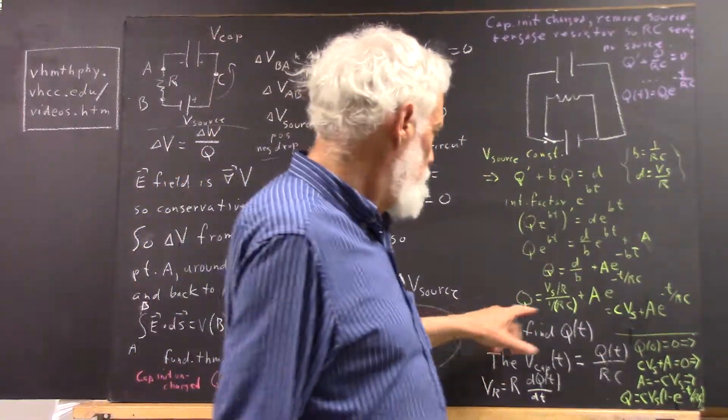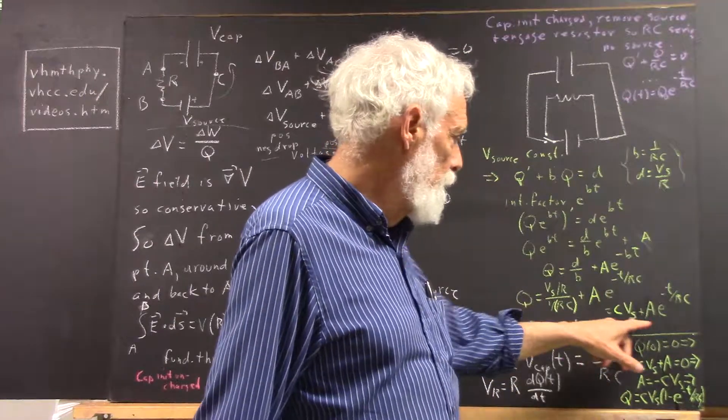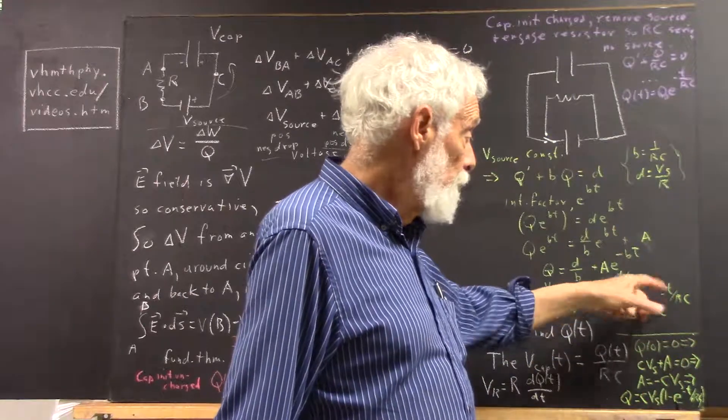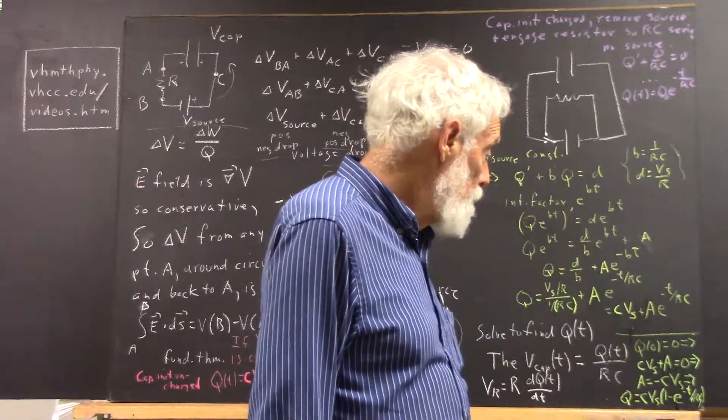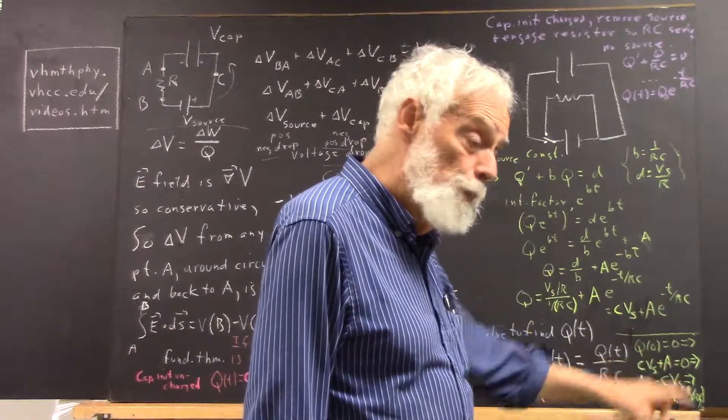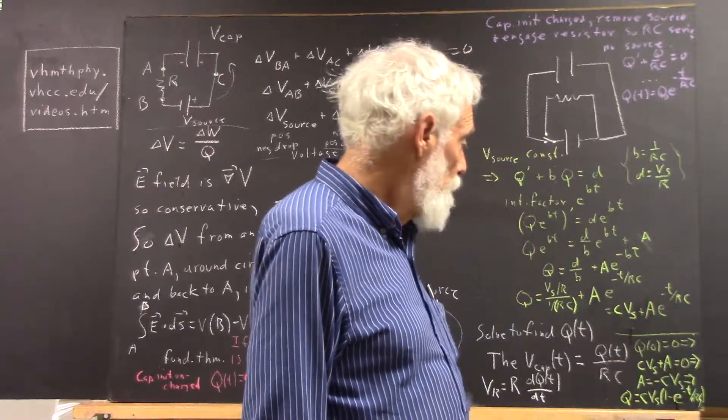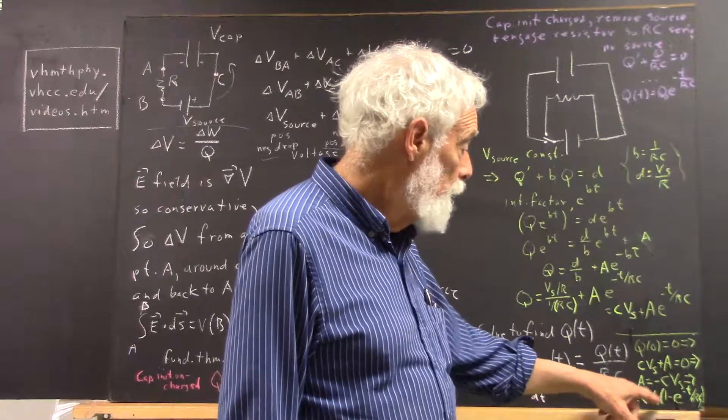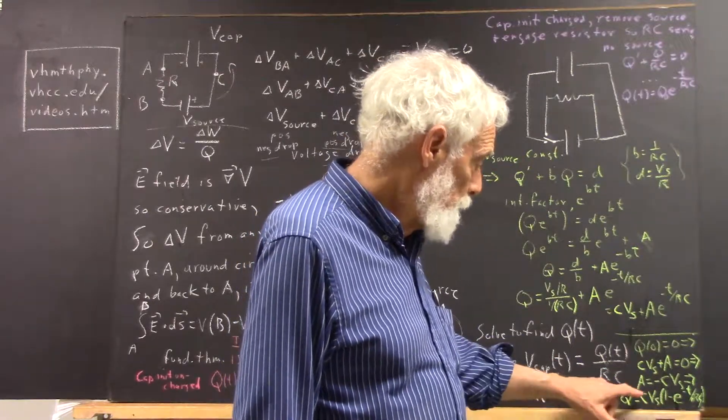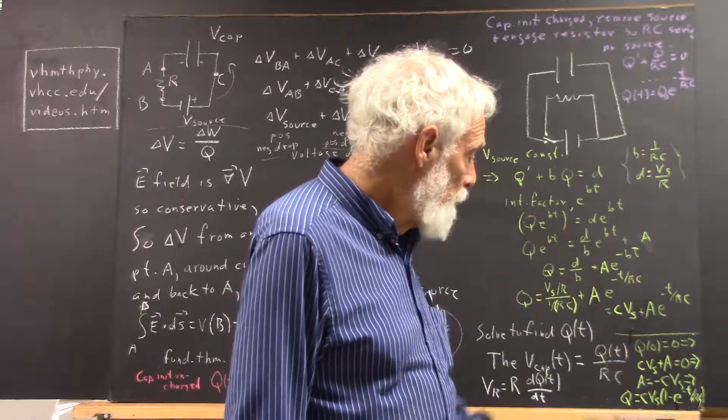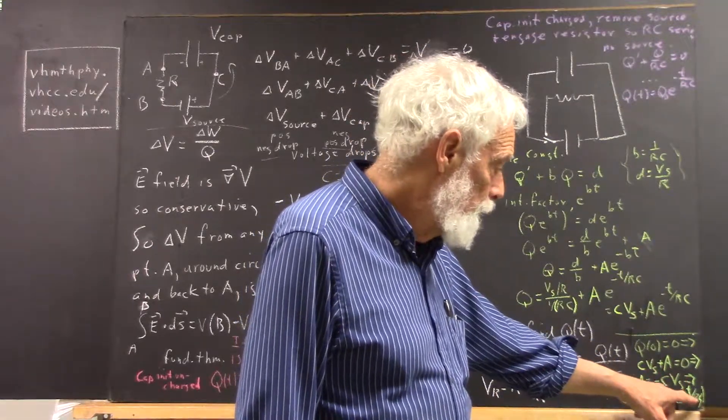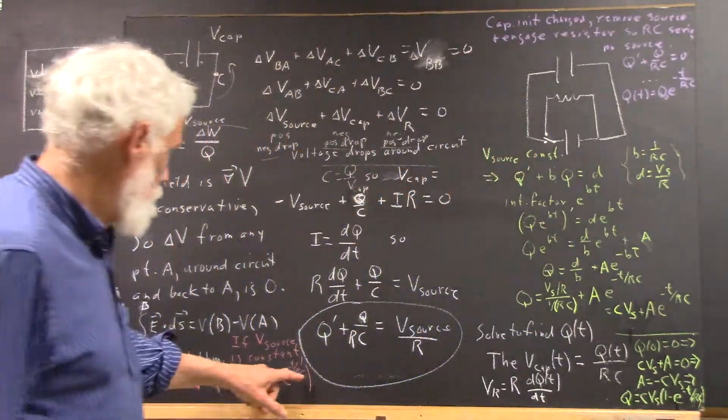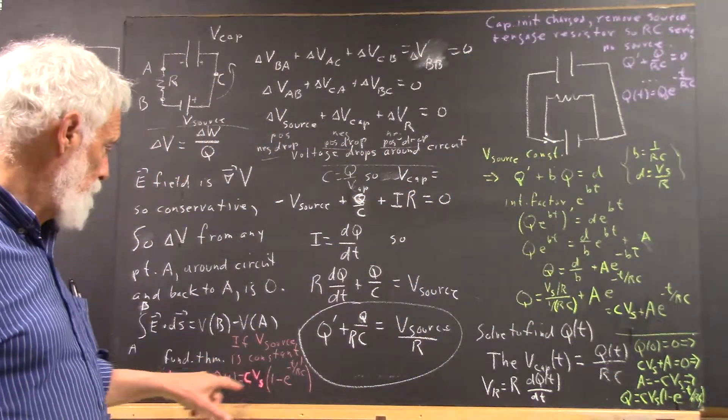If we plug that in here, that implies that CVs + a e^(-t/RC) = 0 when t equals 0. That gives us CVs + a = 0, so that a is negative CVs. This solution becomes q = CVs times (1 - e^(-t/RC)). You can't read that RC there, but I've written it out a little more neatly over here, that same solution.